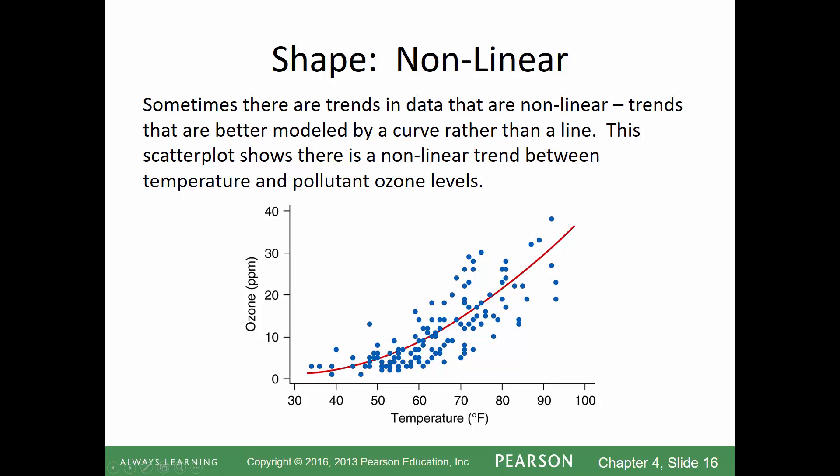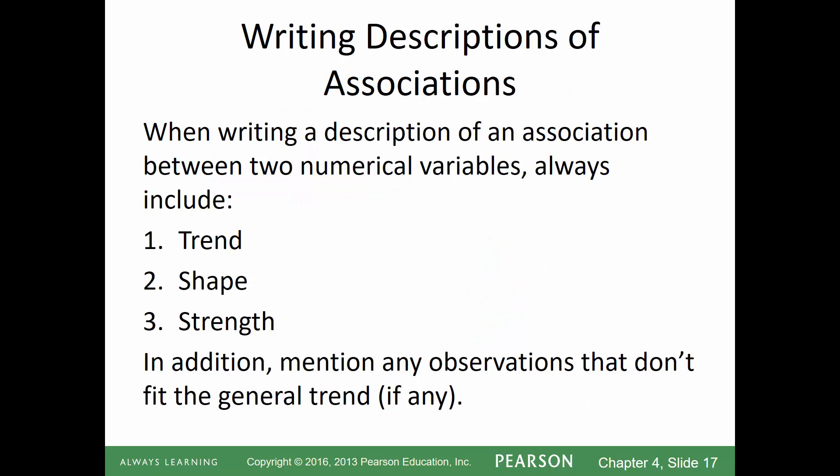Sometimes the type of trend isn't obvious and becomes more apparent with more data points. If we only have five data points, it's really hard to tell if the trend is linear or nonlinear, or assess strength. You always want as many data points as possible. When writing descriptions of associations, we still want to talk about trend, shape, and strength.